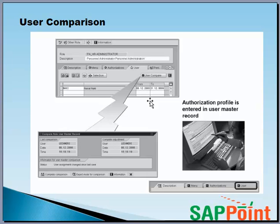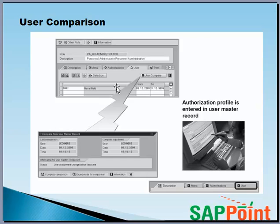Why do you need to do a user comparison? You need to do the user comparison for users to be authorized to execute the transaction codes contained in the menu tree of their roles. Their user master record must contain the profiles for the corresponding users. When you assign that role to the user, the profiles associated with the role are entered into the user master record, because technically the authorizations are contained in the profiles. Whenever a role is assigned, the profiles associated with that role should be assigned to the users.